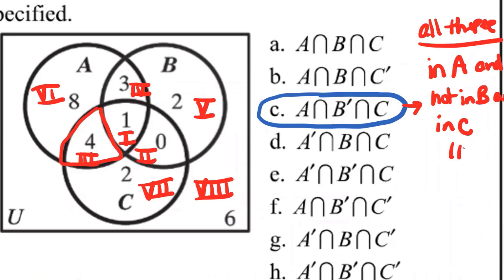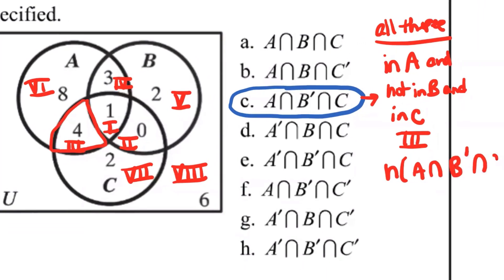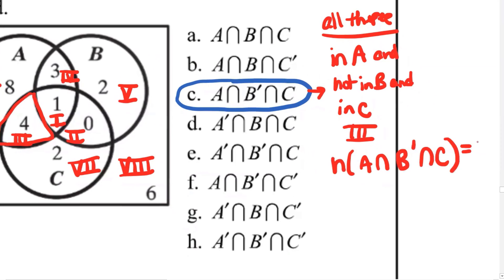Only region three would be in A and not in B, but in C. So that's going to tell us that the number of elements in A intersect B complement intersect C is going to be four.